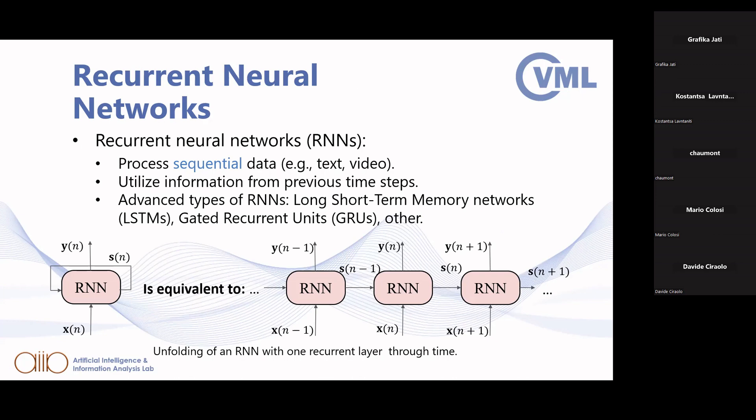Another type of deep neural network that used to be really popular are recurrent neural networks, developed to process sequential data like text or video. This is a different architecture from CNNs or MLPs, using multilayer perceptrons or convolutional layers inside recurrent blocks. The basic RNN was the first developed, but more advanced types followed, like long short-term memory networks or gated recurrent units.